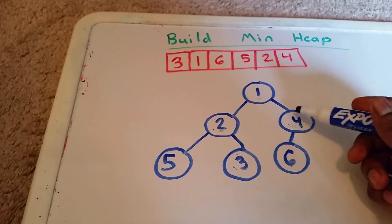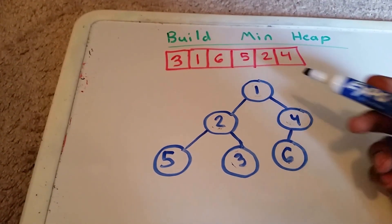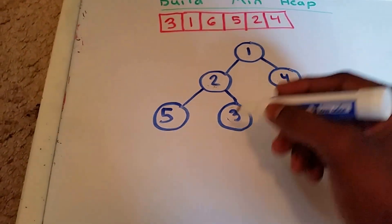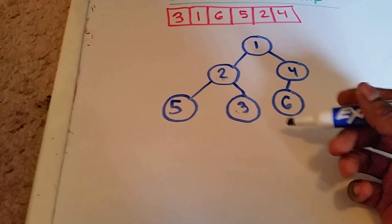So this is our heap. And now how it will look in the array, now that we've done all these swapping of the elements.